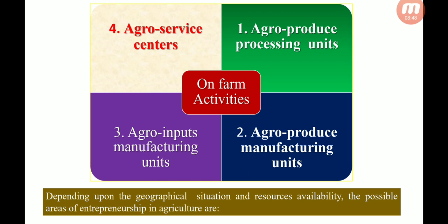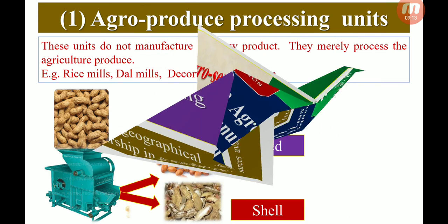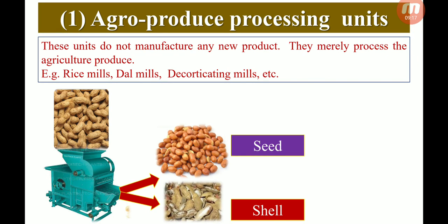Here we can see some on-farm activities. Depending upon the geographical situation and resource availability, the possible areas of entrepreneurship in agriculture are: first, agro-produce processing units; second, agro-produce manufacturing units; third, agro-input manufacturing units; and fourth, agro-service centers. Starting with agro-produce processing units — as the name suggests, these units do not manufacture any new product. They merely process the agricultural produce, such as in rice mills, dal mills, and decorticating mills. For example, from groundnut, the seed and shell are separated, and from paddy, rice is produced.